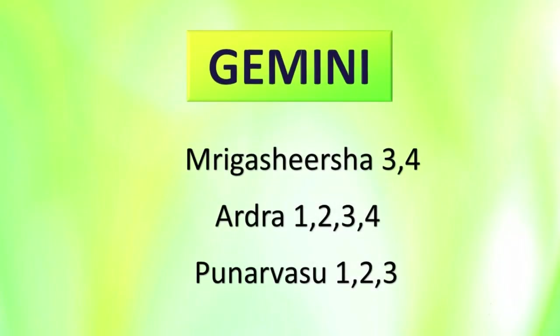The house of Gemini has the third and fourth pada of Mrigashirshha — half of Mrigashirshha nakshatra is in Taurus and the other half is in Gemini. The house of Gemini also has the first, second, third and fourth pada of Ardra, and 75% of Punarvasu nakshatra — the first, second and third pada of Punarvasu. The remaining fourth pada of Punarvasu is in Cancer. In total, the house of Gemini has nine padas of stars.